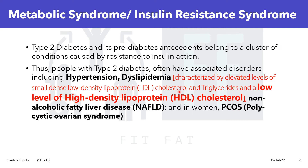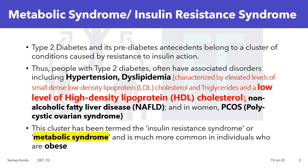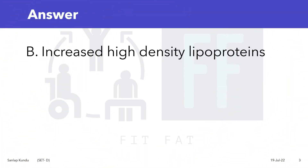Additional features include high LDL cholesterol, non-alcoholic fatty liver disease, and in women, polycystic ovarian syndrome (PCOS). This cluster is termed the insulin resistance syndrome or metabolic syndrome, and is more common in obese individuals. Therefore, the answer is option B — increased high density lipoproteins — because HDL is actually decreased in metabolic syndrome.